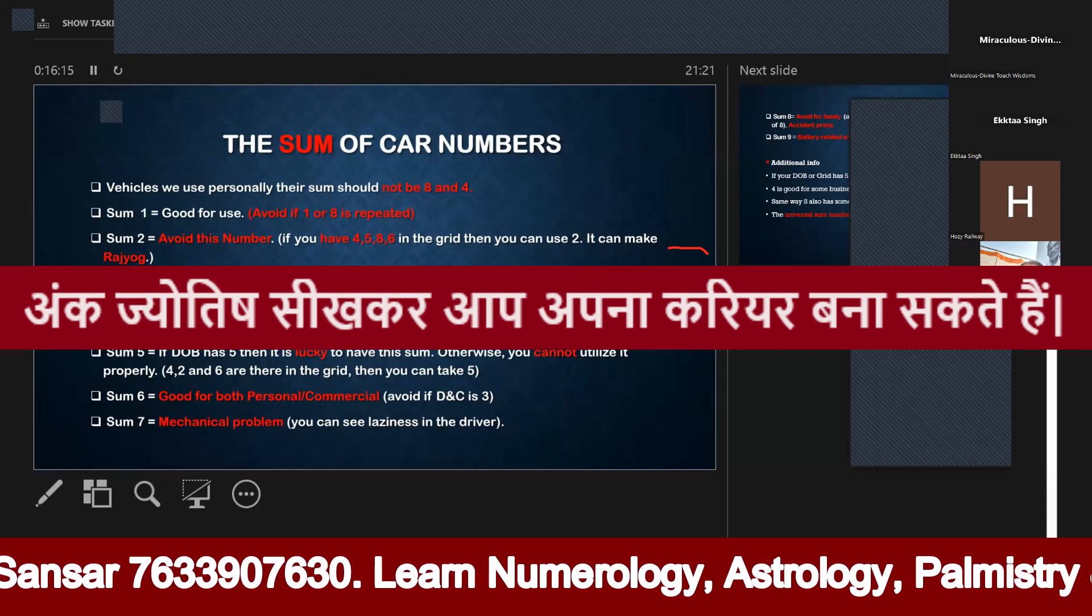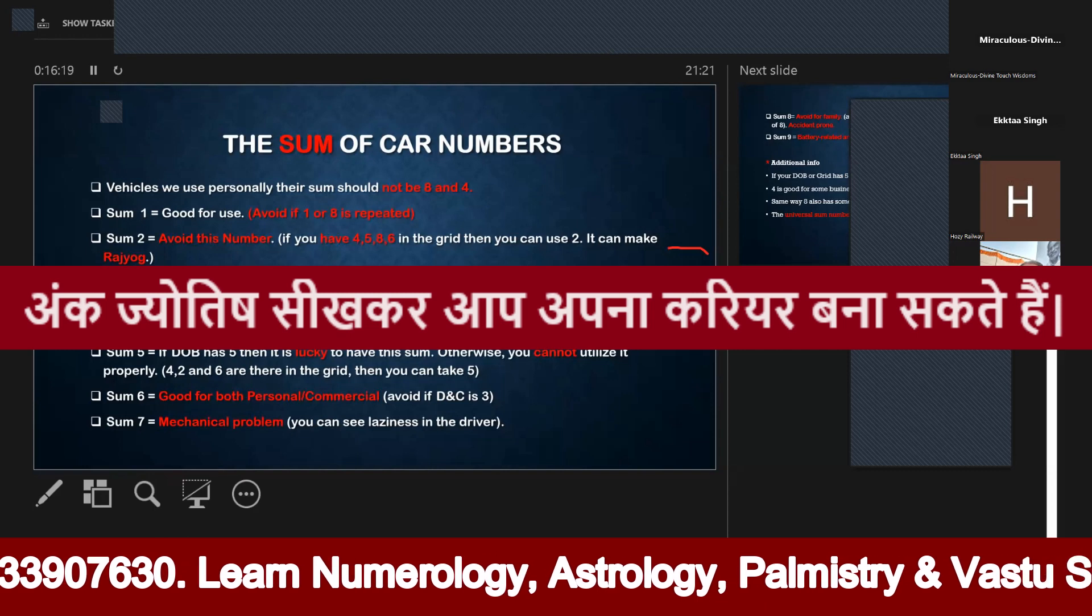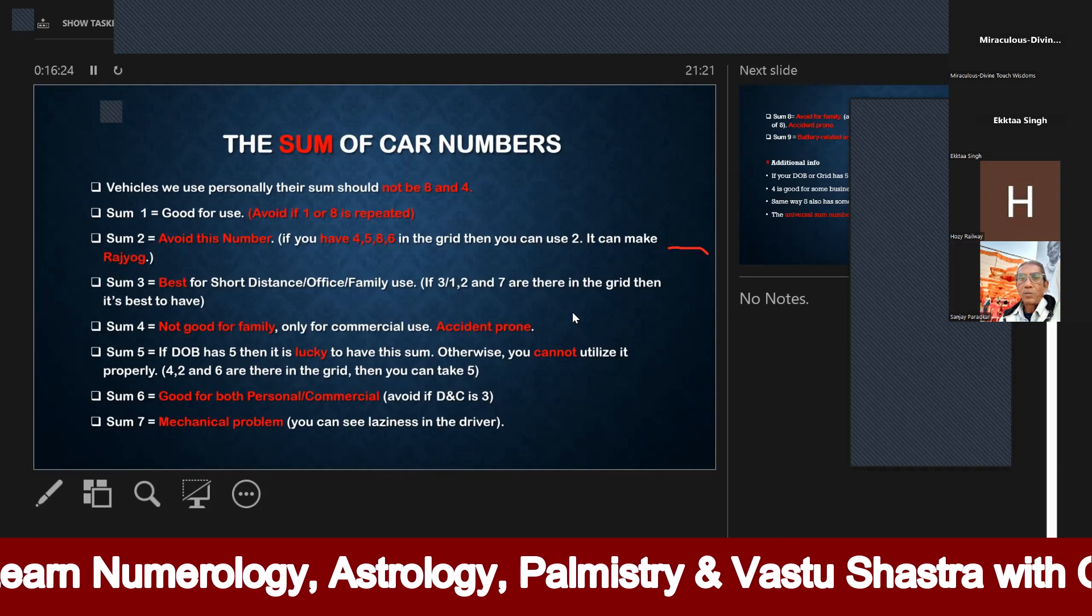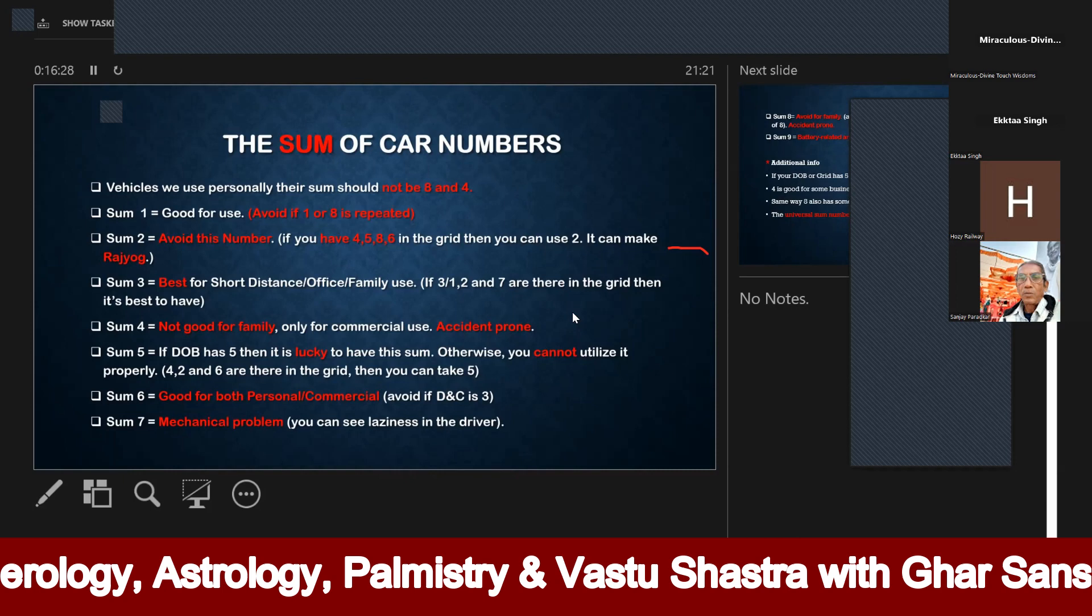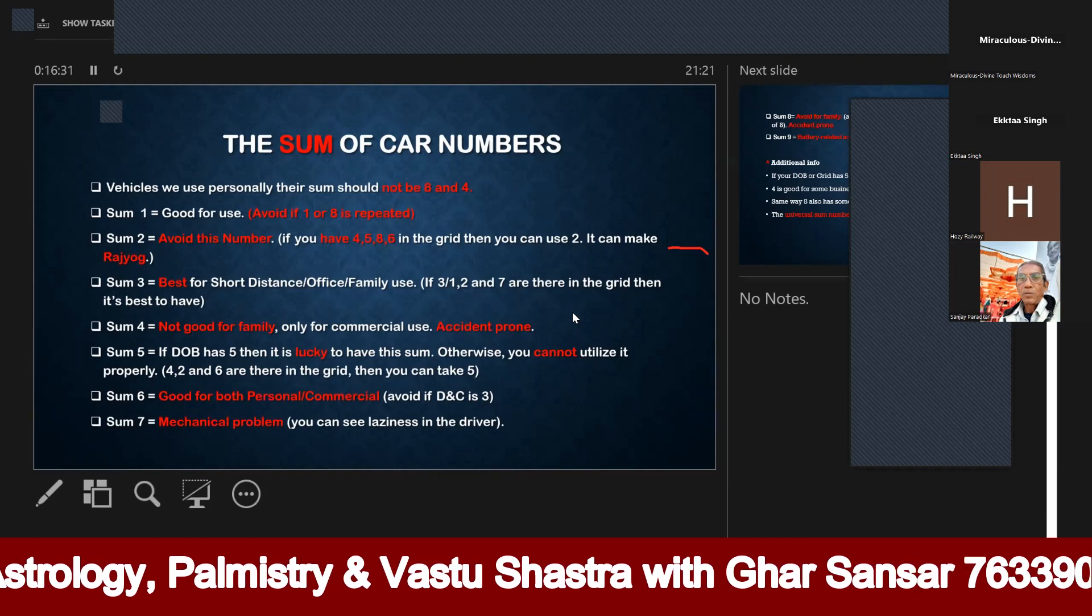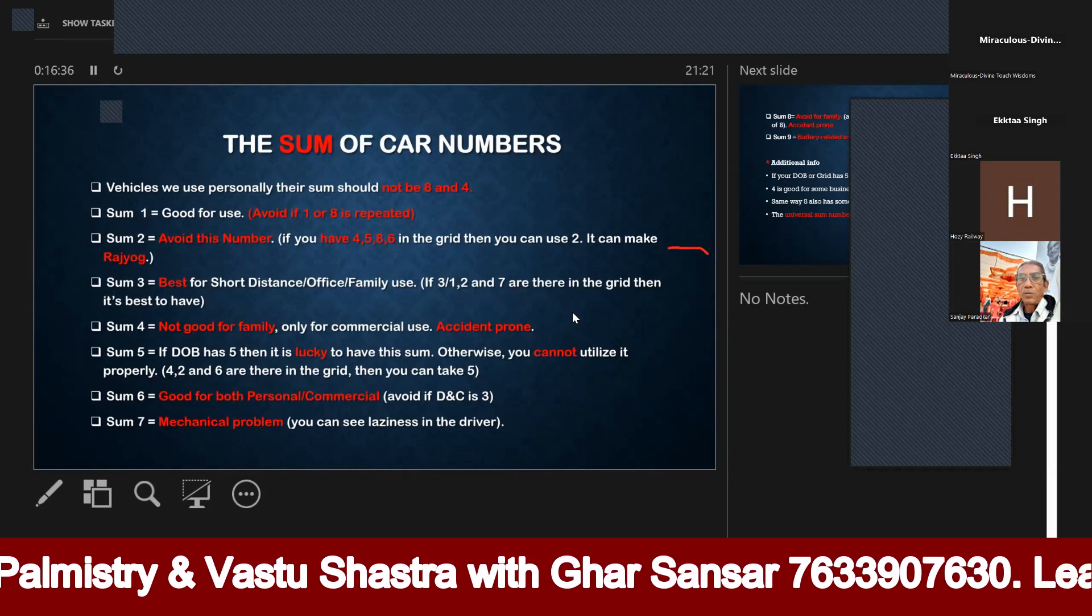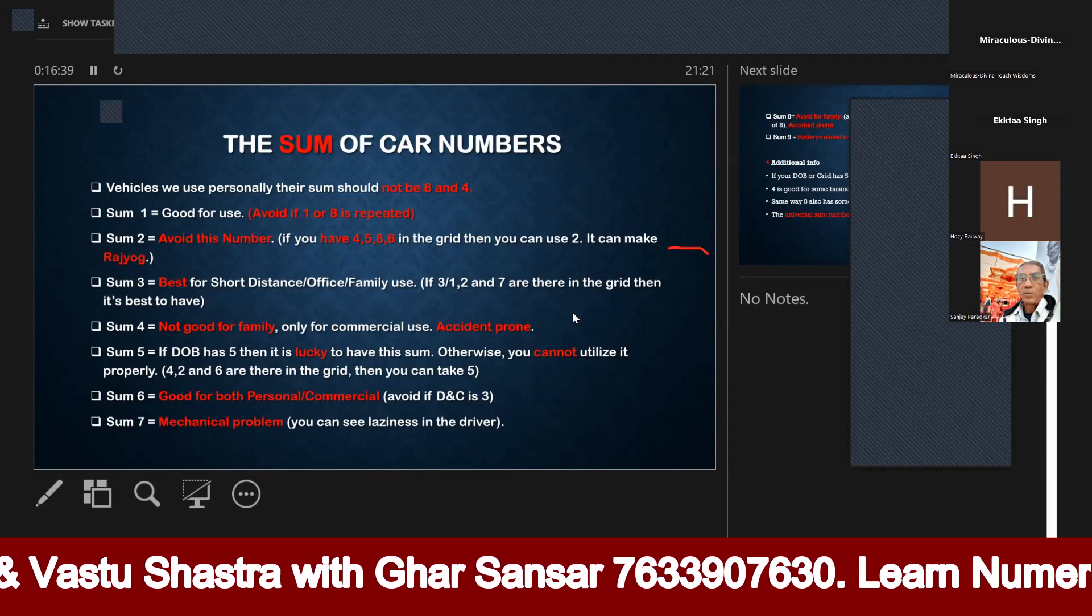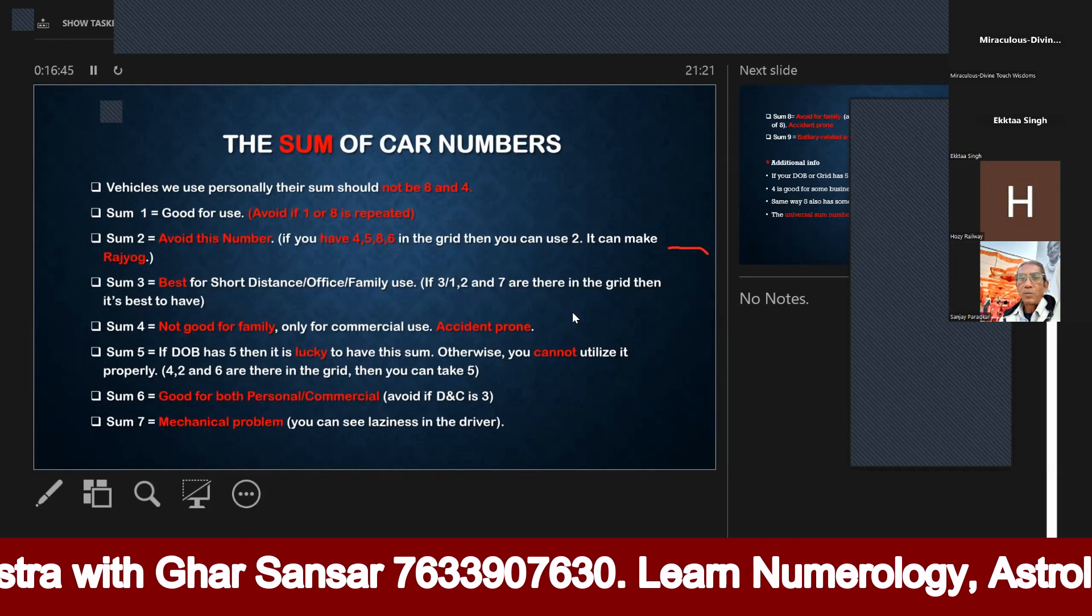So here we will see that if we have the last option, we will take 6. But we will avoid this. Now next is our sum number 4. Sum number 4 is not good for family use. Here I have mentioned that it is accident prone, which means the risk of accidents remains in it.